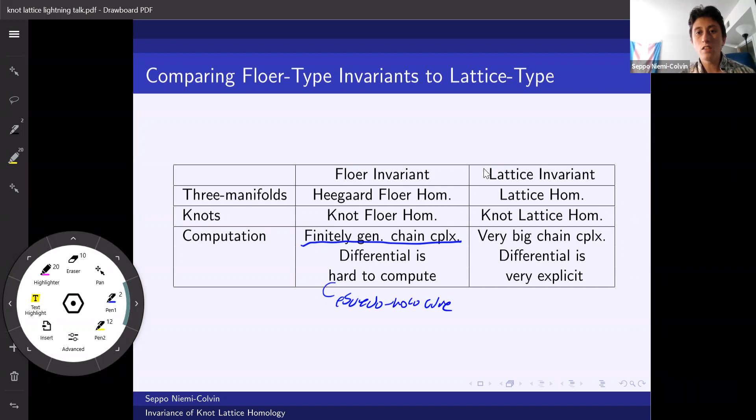On the lattice side, the differential is very explicit. Yay. The trade-off, though, is that it is a very big chain complex that is a priori infinitely generated. One can make it finite chain complexes that support the interesting things, but you have to really look at the forest instead of the tree.